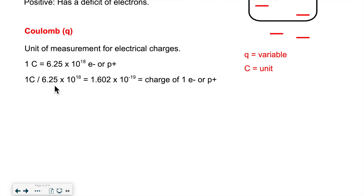One particle has a charge of 1.602 times 10 to the negative 19. You may come across that number — all it means is that it's the charge of one electron or one proton. Normally the number we'll be working with the most is 6.25 times 10 to the 18 charged particles per coulomb. Again, q is the variable and C is the unit.